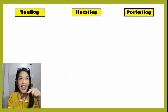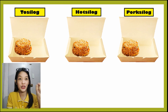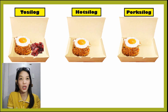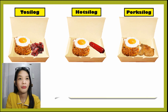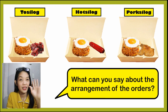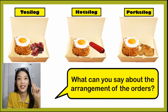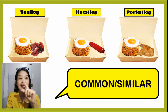From the orders Tosilog, Hotsilog, and Porksilog, this is how she arranged the orders. She started with the rice — three rice — then the three eggs, then one by one the tosino, the hotdog, and the pork chop. What can you say about the arrangement of the orders? Do you notice something? That is related to our lesson in math. When we define the intersection of sets, it is said that there are common elements between the sets. When we say common elements, it means similar elements.